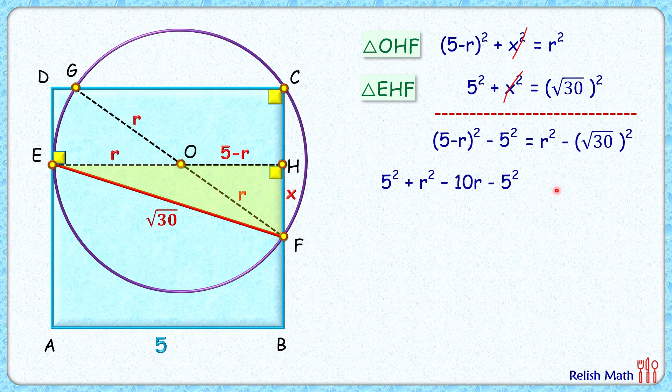Simplifying it, 5² and -5² get cancelled, r² and r² get cancelled. We'll get -10r = -30, or r = 30/10, or r is 3 centimeters. And that's our answer. I hope you enjoyed the solution. I will see you in the next video. Till then, tata, bye bye.